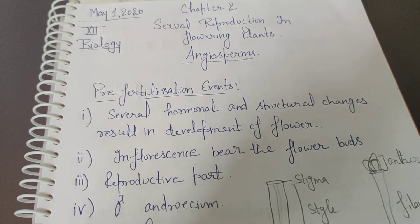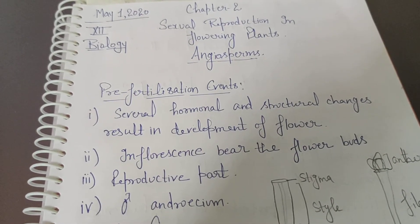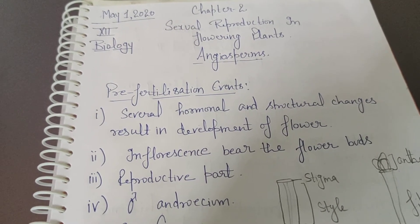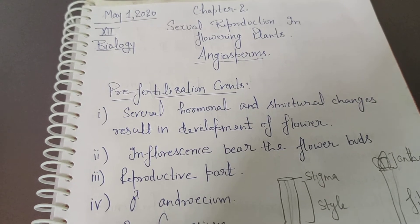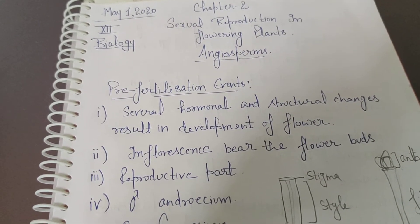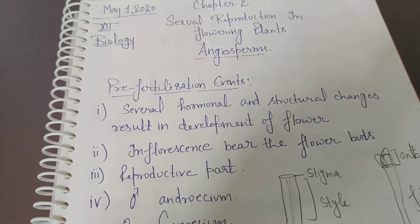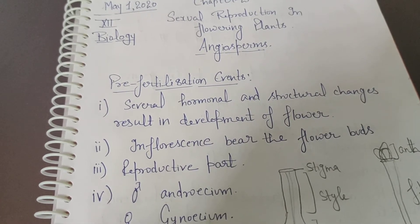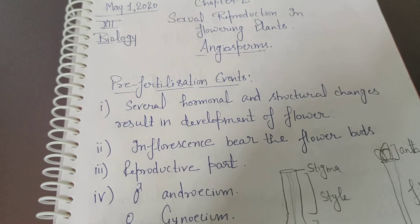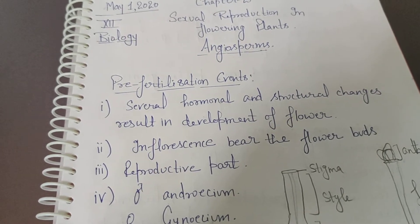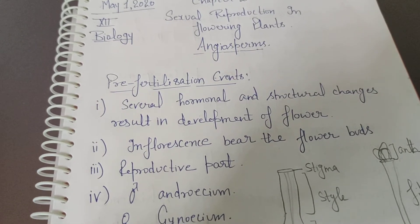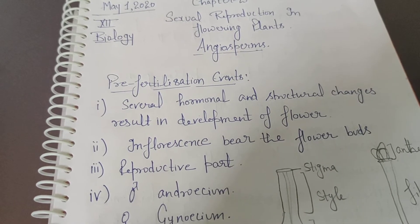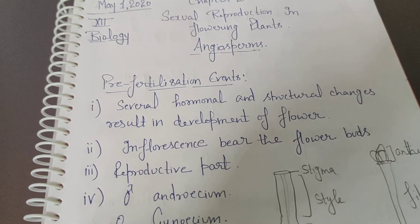Let's first recollect the structure of a flower. In previous classes you have practiced the structure of a flower and you know all its parts. If we talk about a bisexual flower, the flower consists of two reproductive parts. If the flower is bisexual, the male and female reproductive organs are present in the same flower. The male reproductive part is called the stamen, and the female reproductive part is called the pistil.